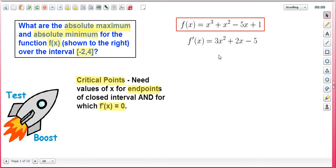So f prime of x is as shown and factored here. We need to find the zeros for f prime of x, so we set this equal to 0, and then x is equal to either negative 5 thirds or 1.